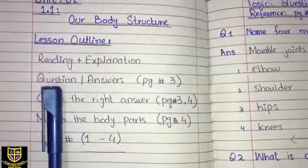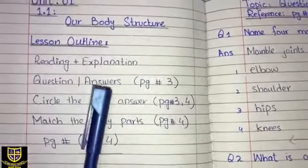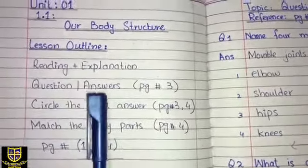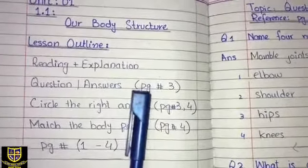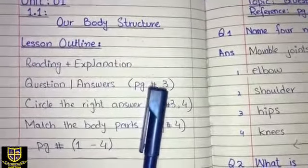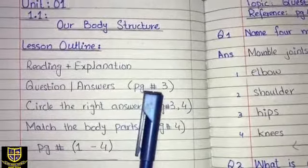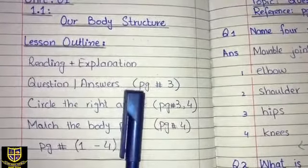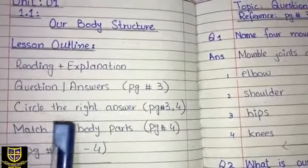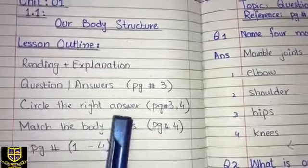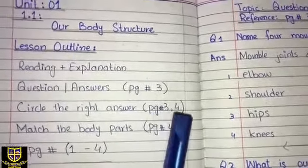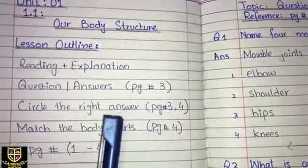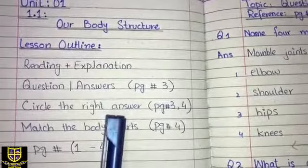Then you have to write question and answers — reference page number 3. On page number 3, you have question and answers, and you will copy them. Next is circle the right answer, page number 3 and 4. On page numbers 3 and 4, circle the right answer — which I gave you in the last class.